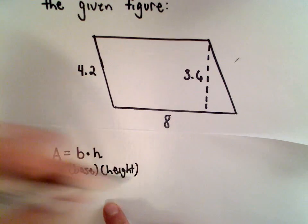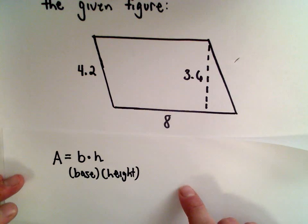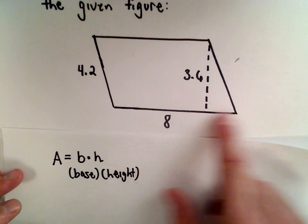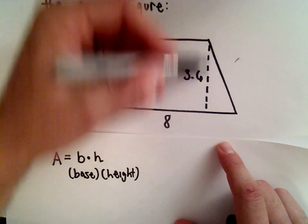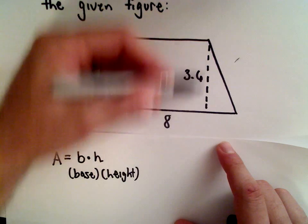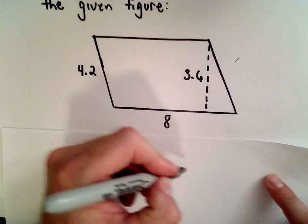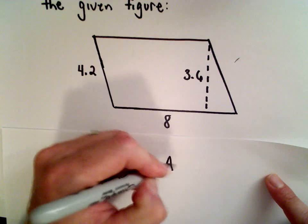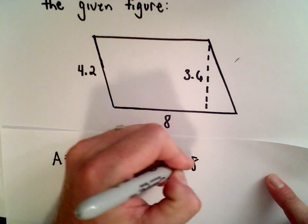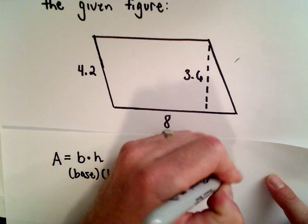Fortunately, we're already given both of those things. We're given that it has a base of length 8, and the height is this dashed line here of 3.6. So we have to multiply those two values together. The area is going to equal 8 multiplied by 3.6.